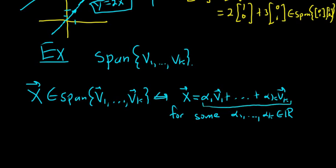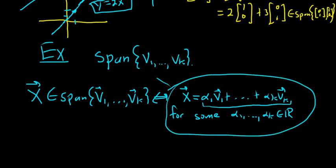So you can say there exist scalars, there exist real numbers such that this vector here is a linear combination of these other vectors. Conversely, it goes the other way. So if you have this condition, then this implies that x is in the span. So it goes both ways. So if x is in the span, x is a linear combination of these vectors. If x is a linear combination of these vectors, then x is in the span.